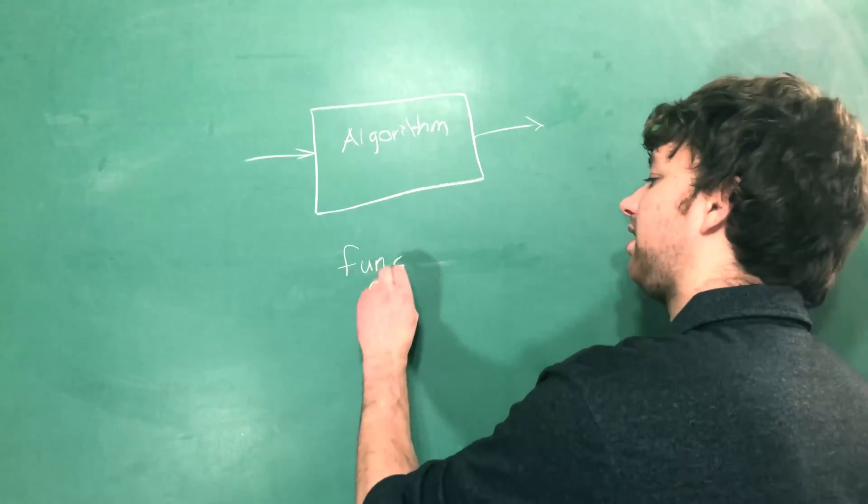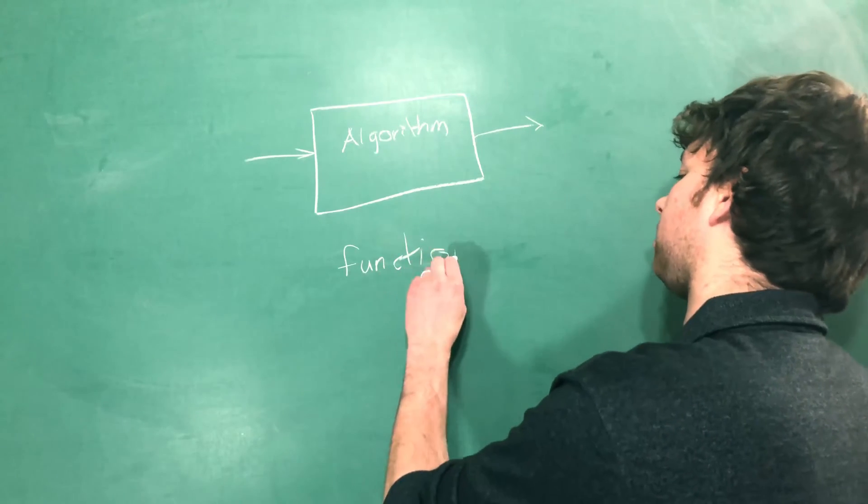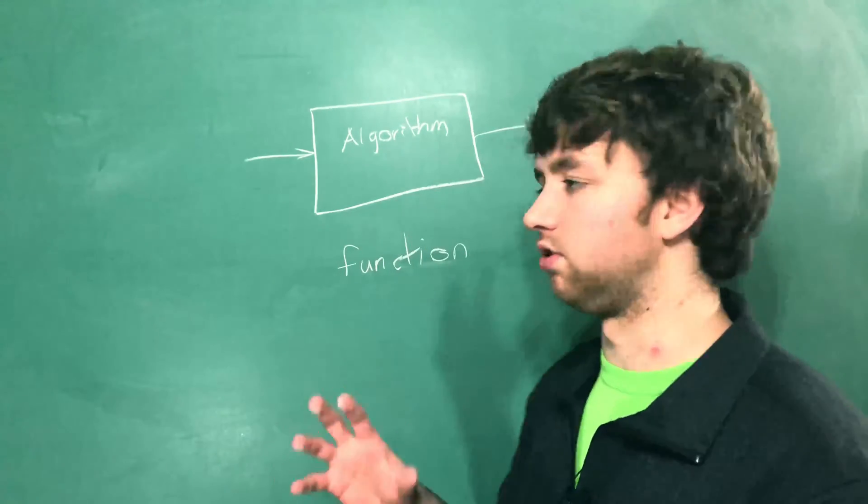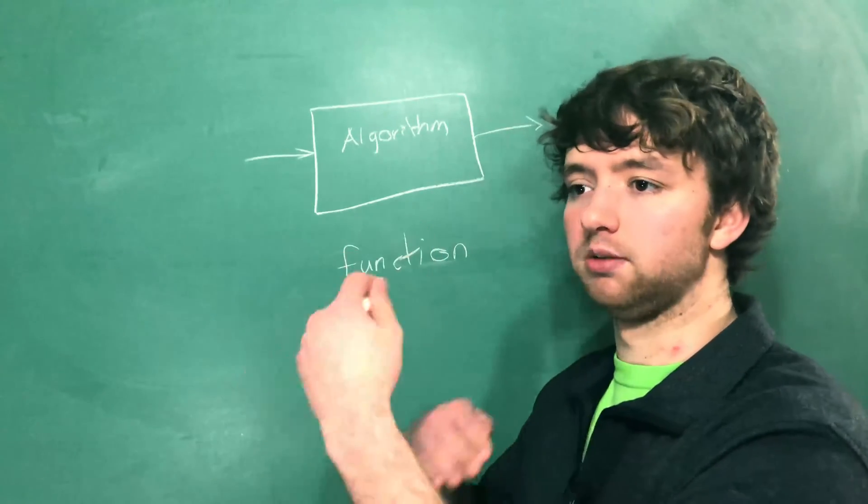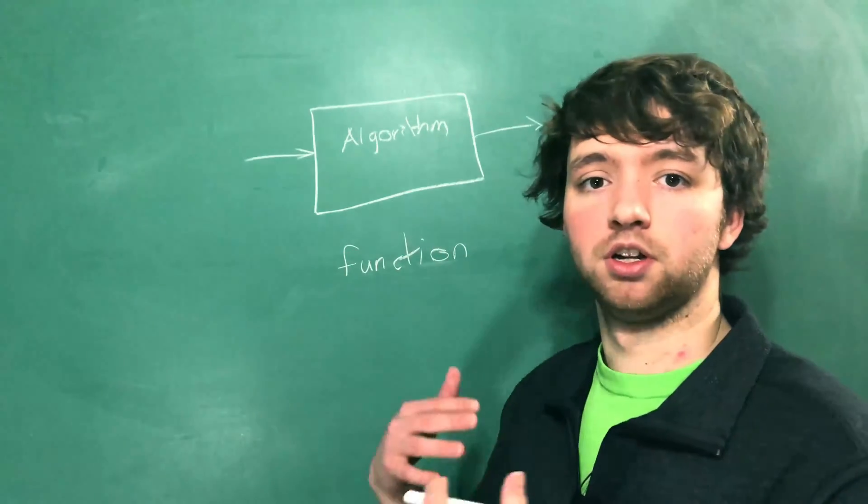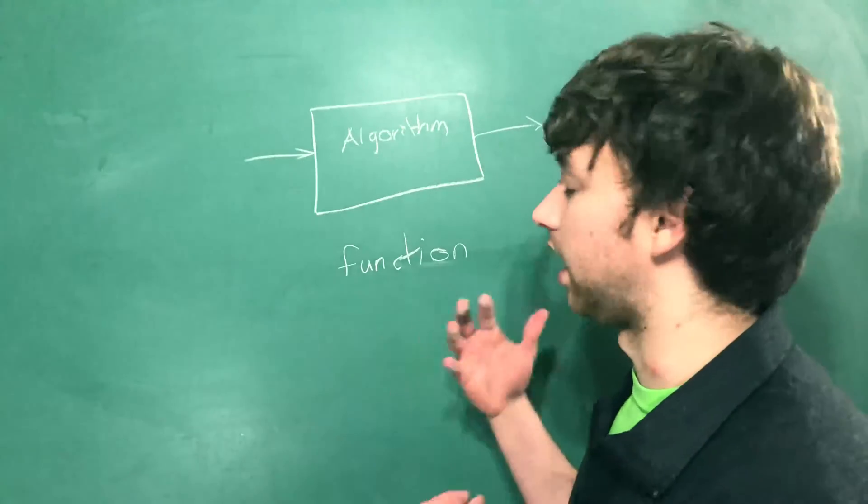you can kind of think of an algorithm as a function. So if you didn't get that function vibe, that's okay. But a function is essentially the same thing, you just take input, and you have output, and you process that input and somehow get an output using some lines of code.